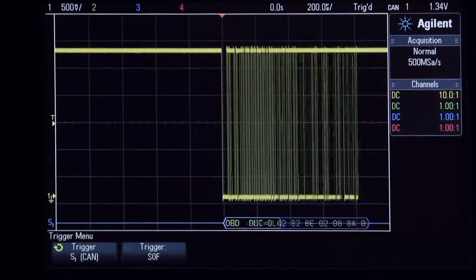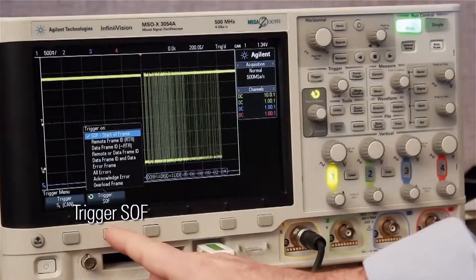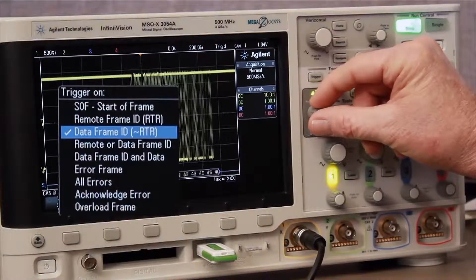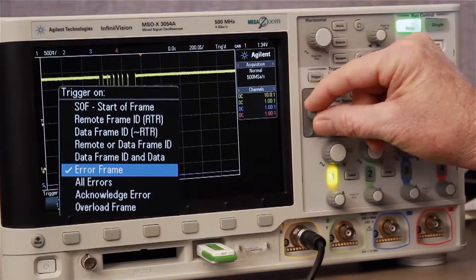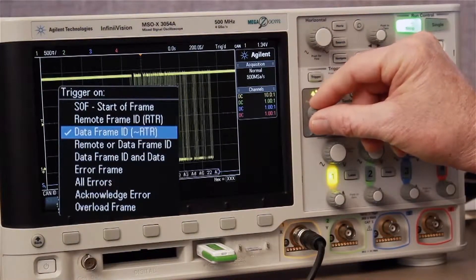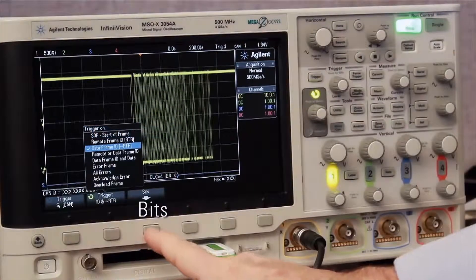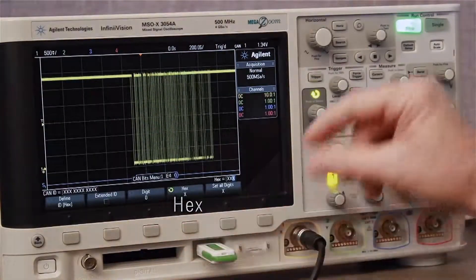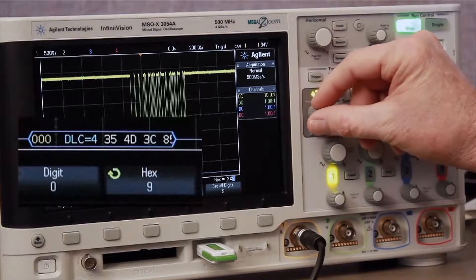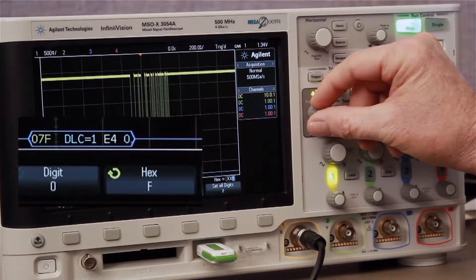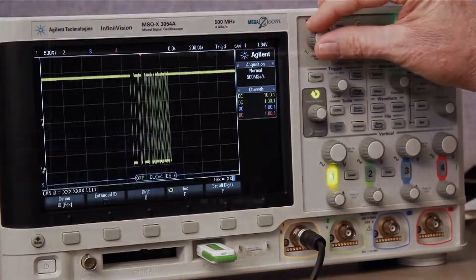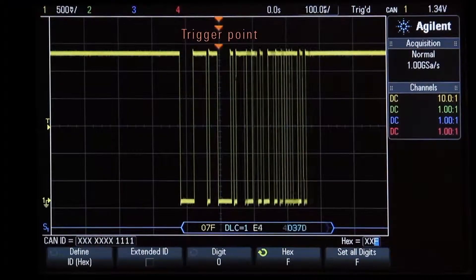Besides triggering on the start of any frame, this scope provides a variety of CAN trigger conditions to choose from. Let's select a trigger on a data frame with a specific ID. Then dial in a frame ID value, in this case 07F. We have now established a stable trigger condition.